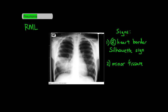Next is a right middle lobe pneumonia, which can be anywhere in this area. The two signs you want to look for here include the silhouette sign of the right heart border as well as the minor fissure. The right middle lobe borders the right heart border, so a right middle lobe pneumonia can lead to the disappearance of the right heart border. If the minor fissure is accentuated and there's only an opacity below it, then it's likely that the pneumonia is in the right middle lobe.